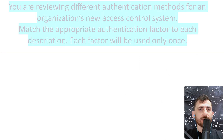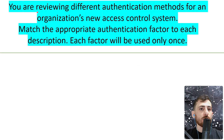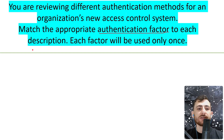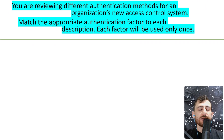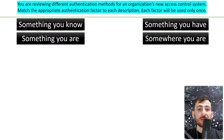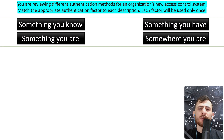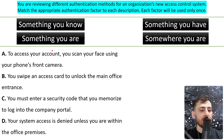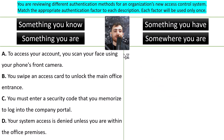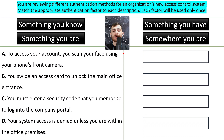Here is the question. You are reviewing different authentication methods for an organization's new access control system. Match the appropriate authentication factor to each description. We have a couple of authentication factors — something you know, something you are, something you have, and somewhere you are — and descriptions from A all the way up to D. Each factor will be used only once.